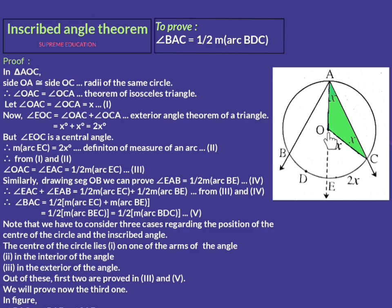Similarly, by drawing OB, we can prove that angle EAB equals half of arc BE. This is statement number 4.